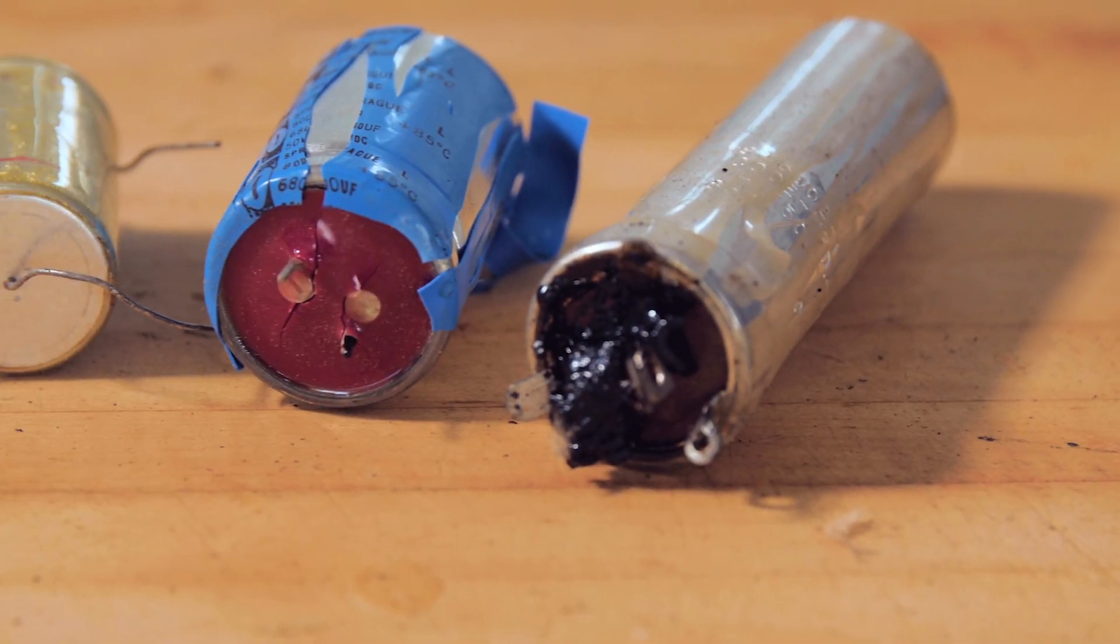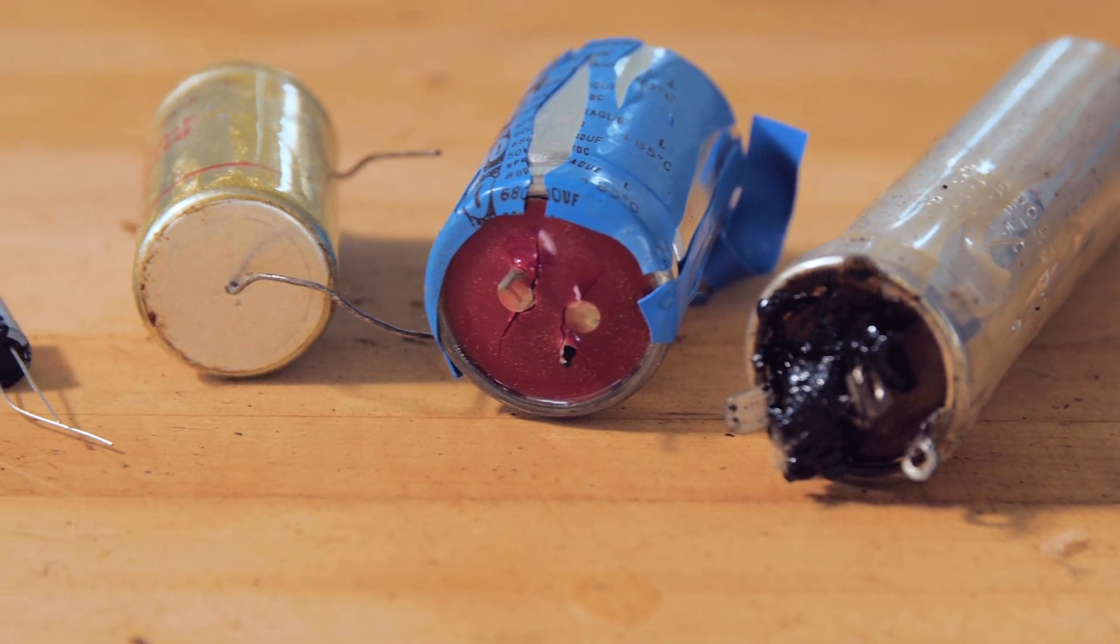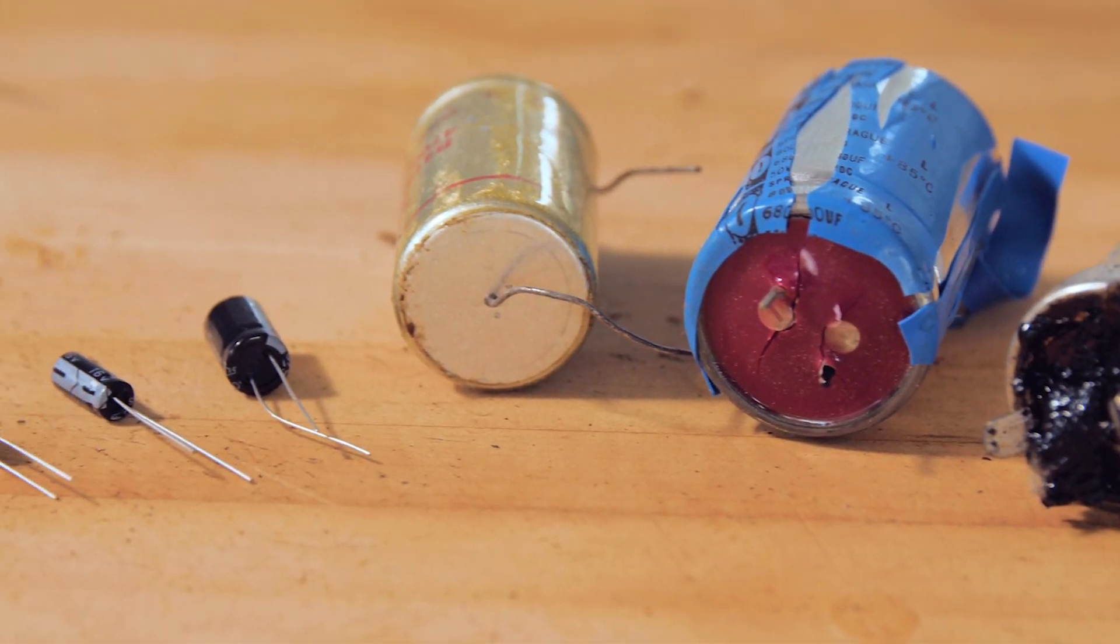The key problem with electrolytic capacitors is that applying DC of a polarity opposing that of the capacitor can cause catastrophic failure, but electrolytic capacitors are generally constructed in two different ways and each construction fails in a different way.